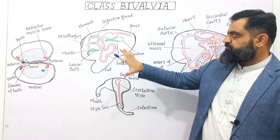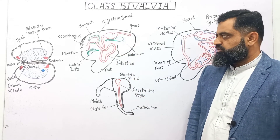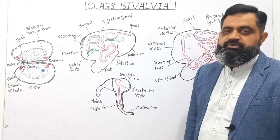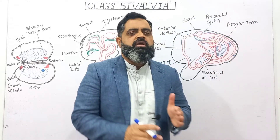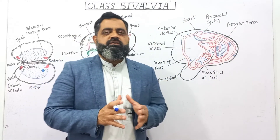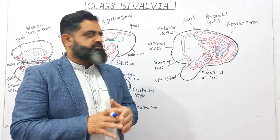So in this way this whole structure constitutes the digestive and excretory system. I hope that makes sense. Now let's move on to the circulatory system of this animal.